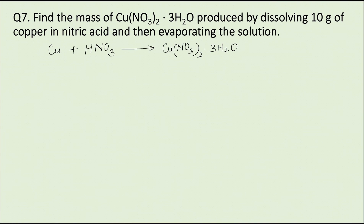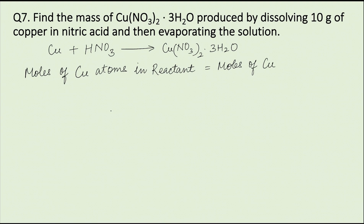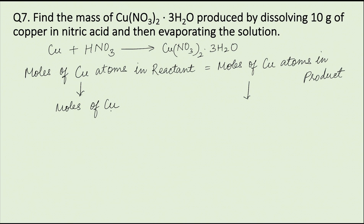Applying the principle of atom conservation on copper atoms, we can write: moles of copper atoms in reactant is equal to moles of copper atoms in product. Moles of copper atoms in the reactant equals moles of copper, and moles of copper atoms in the product equals moles of Cu(NO3)2·3H2O.